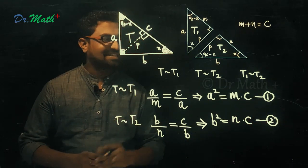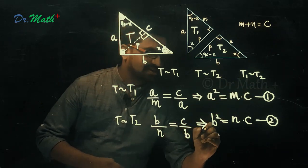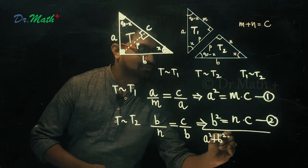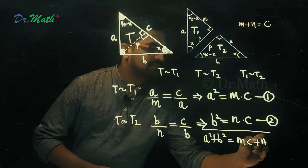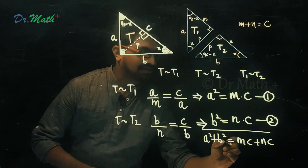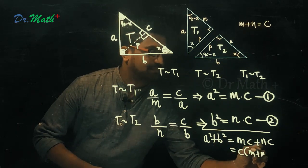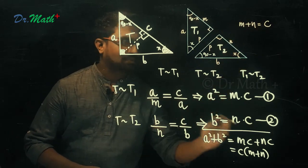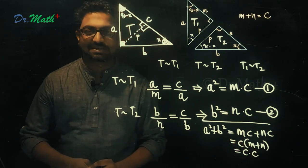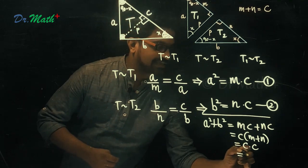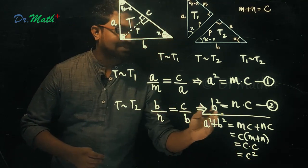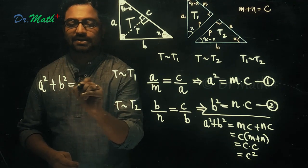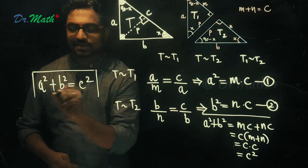We are almost done — we just have to add these two equations. Adding Result 1 and Result 2: A square plus B square equals MC plus NC. Taking C common gives C times (M plus N). But M plus N equals C, so we replace M plus N with C, giving C times C, which is C square. Therefore, A square plus B square equals C square — which is Pythagoras theorem.